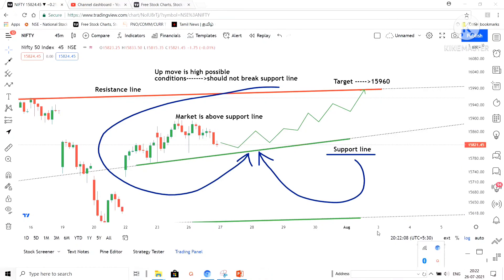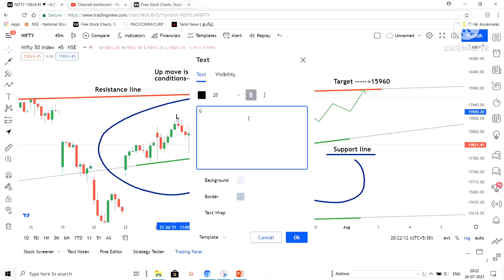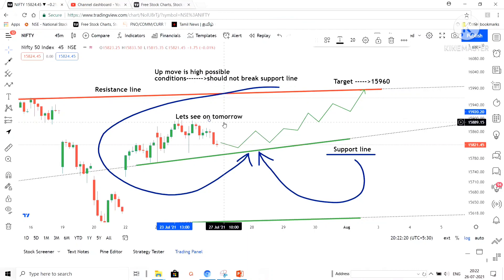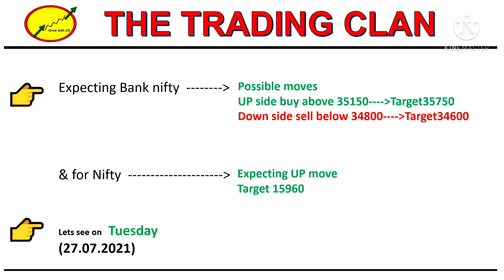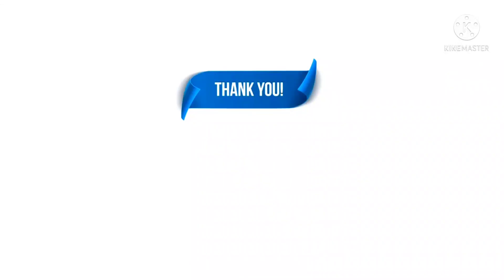We will see the market tomorrow — maybe one or two candles — and then based on the movement we can take up our trades. We will update in our WhatsApp group. I feel the market will go upside if there is no impact from global markets. Let's see tomorrow what will happen. Finally, concluding our predictions: I am expecting Bank Nifty to go in both-side possibilities — above 35,150 we can buy for a target of 35,750. For Nifty, the upside target is 15,960. We will see tomorrow's market and take our trades. Thanks for watching. If the videos are useful, please like, share, and subscribe. Click the bell icon for all notifications. Grow with us.